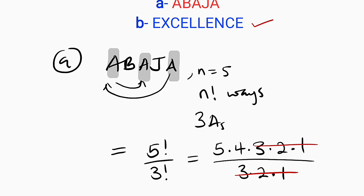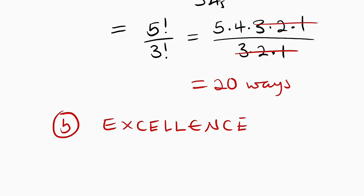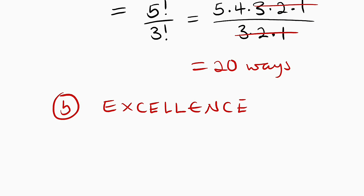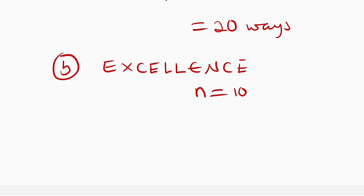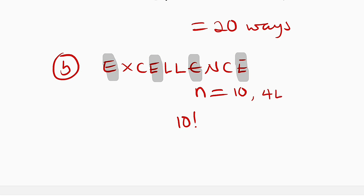Now let us consider part B, which is EXCELLENCE. As you can see, we have ten letters in EXCELLENCE, therefore n equals ten. We have ten factorial different ways of arranging ten objects, but we have a problem again because we have E, E, E, E — all of these E's are identical, so we cannot differentiate them. We have four E's.